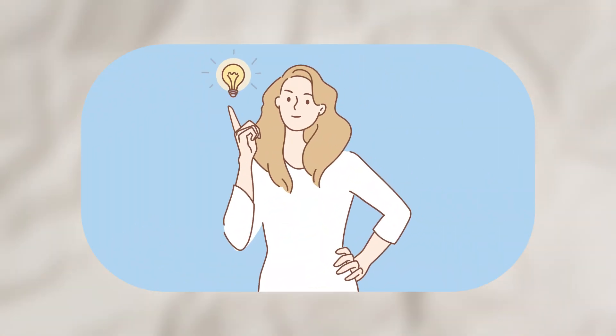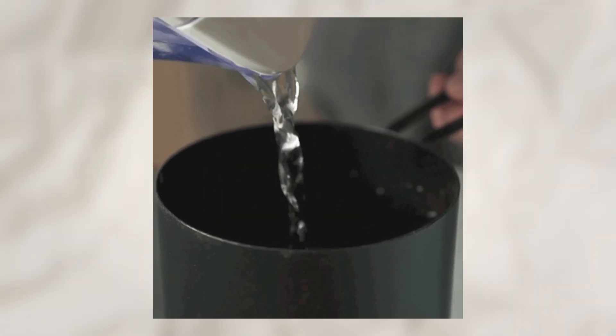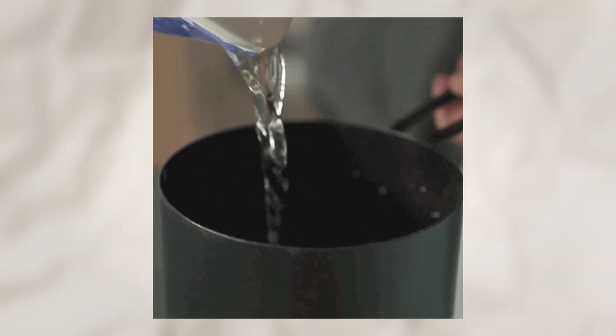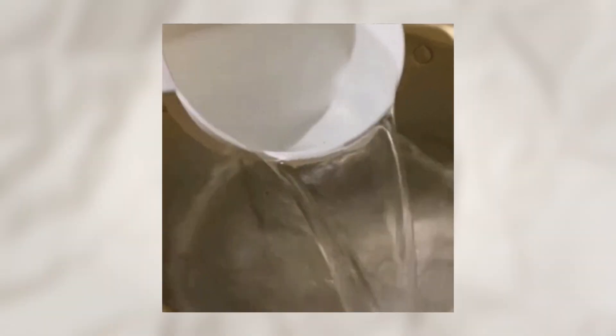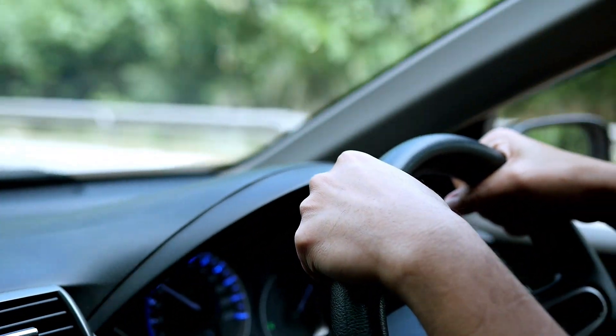To understand it better, imagine this. You're cooking rice. A carburetor is like just dumping water in the pot and hoping you guess the right amount. A fuel injector, on the other hand, is like using a precise measuring cup every single time, adjusting instantly if your heat changes. That's the kind of precision that keeps modern engines running so smoothly.